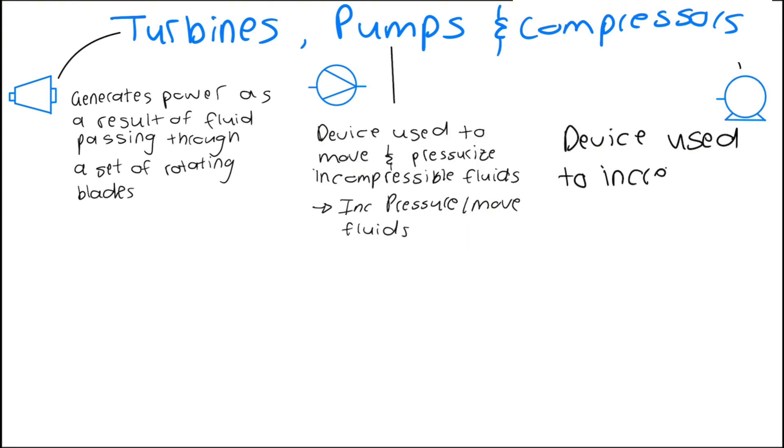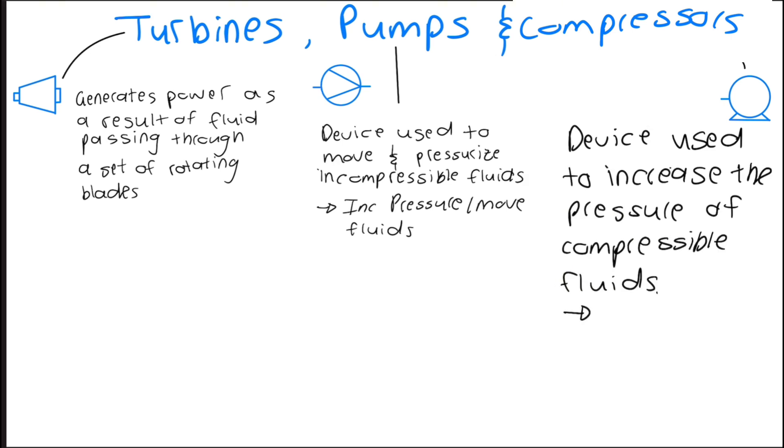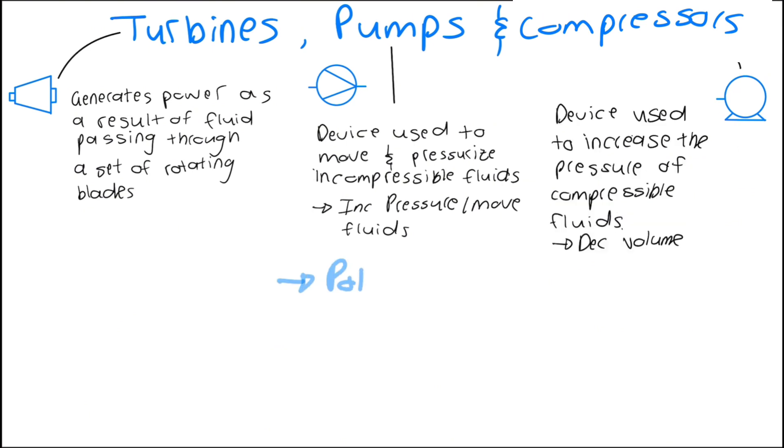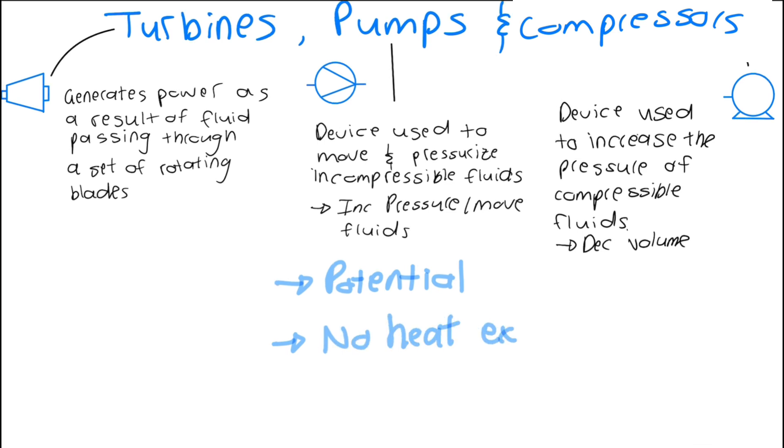A compressor is a device used to increase the pressure of compressible fluids such as gases. It increases pressure by decreasing the volume. In these processes potential energy is important in the energy balance and usually there is no heat transfer. Thus we can simplify our energy balance.